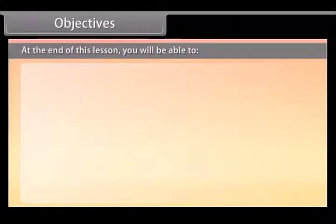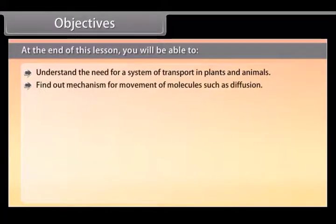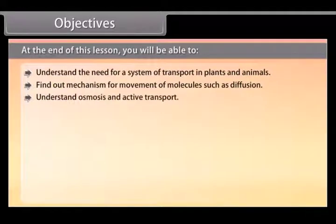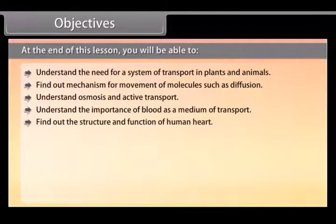Objectives: At the end of this lesson, you will be able to understand the need for a system of transport in plants and animals, find out the mechanism for movement of molecules such as diffusion, and understand osmosis and active transport.